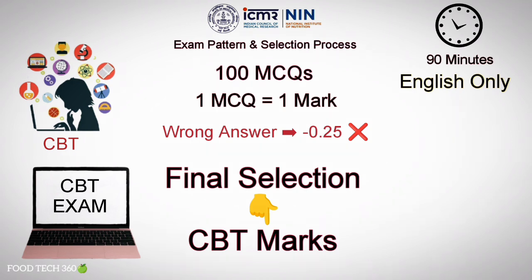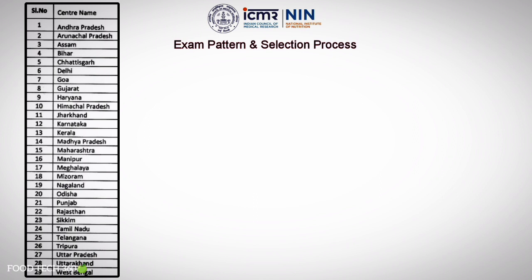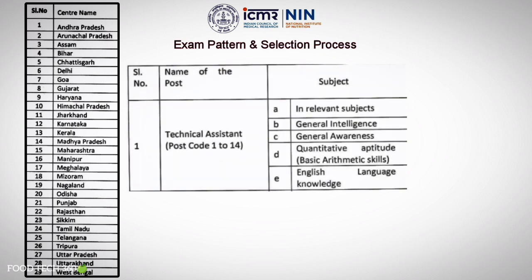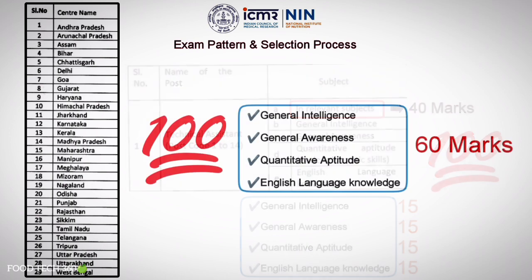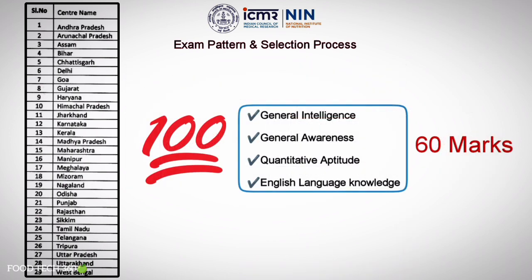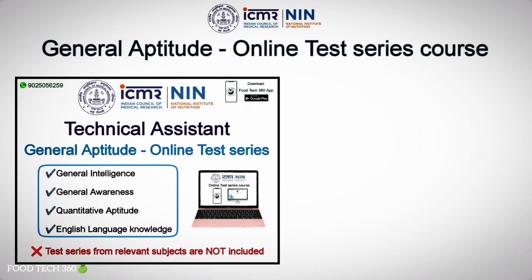Exam centers are available throughout the mentioned states. The written exam syllabus consists of five subjects. 40 questions will be asked from the relevant subjects based on the discipline you apply for. 15 questions each will be asked from the remaining general aptitude related subjects, making a total of 100 marks — out of which 60 marks will be from the general aptitude related subjects.